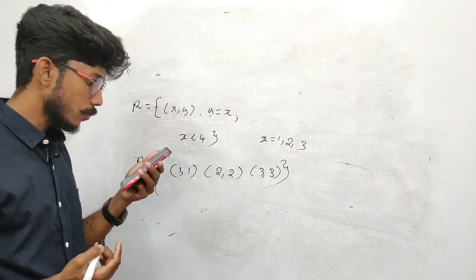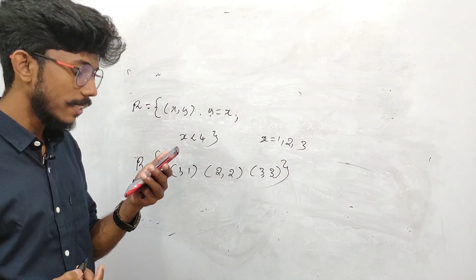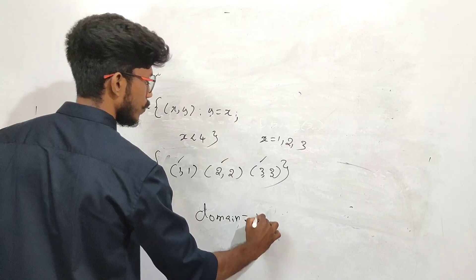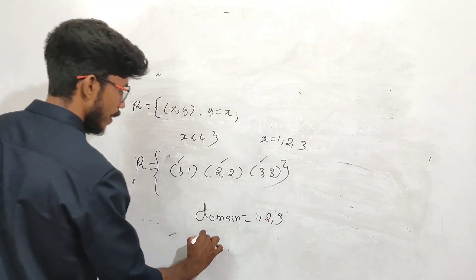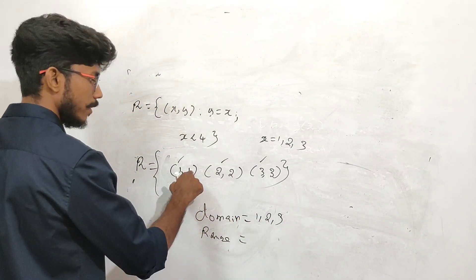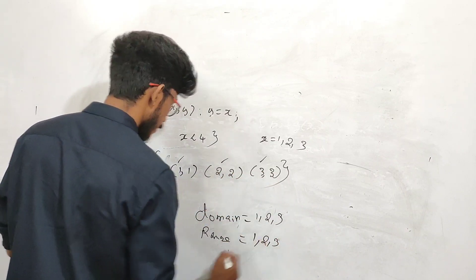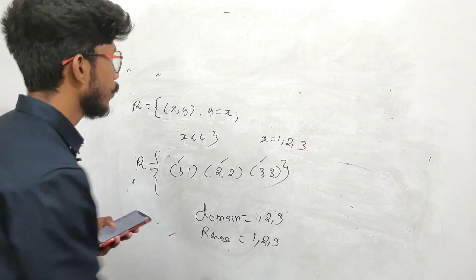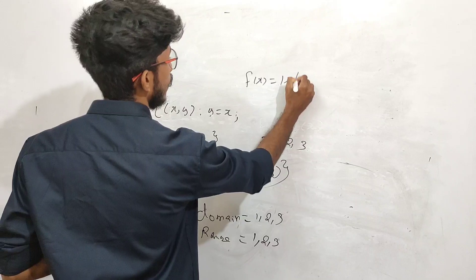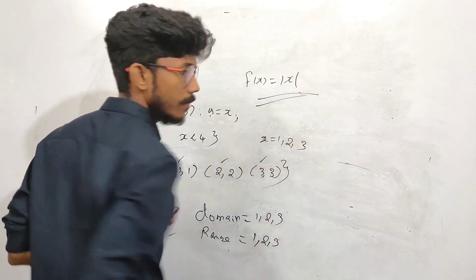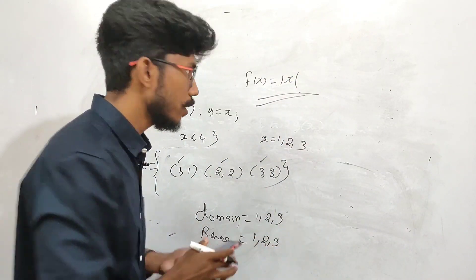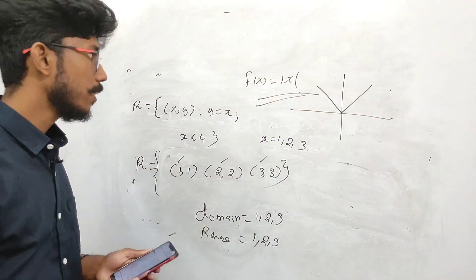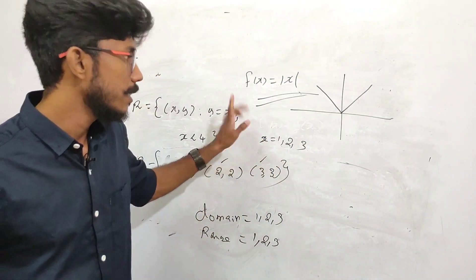This is the relation. If you want to write the graph of the function f of x is equal to mod x, you can see the graph of the function f of x is equal to mod x.